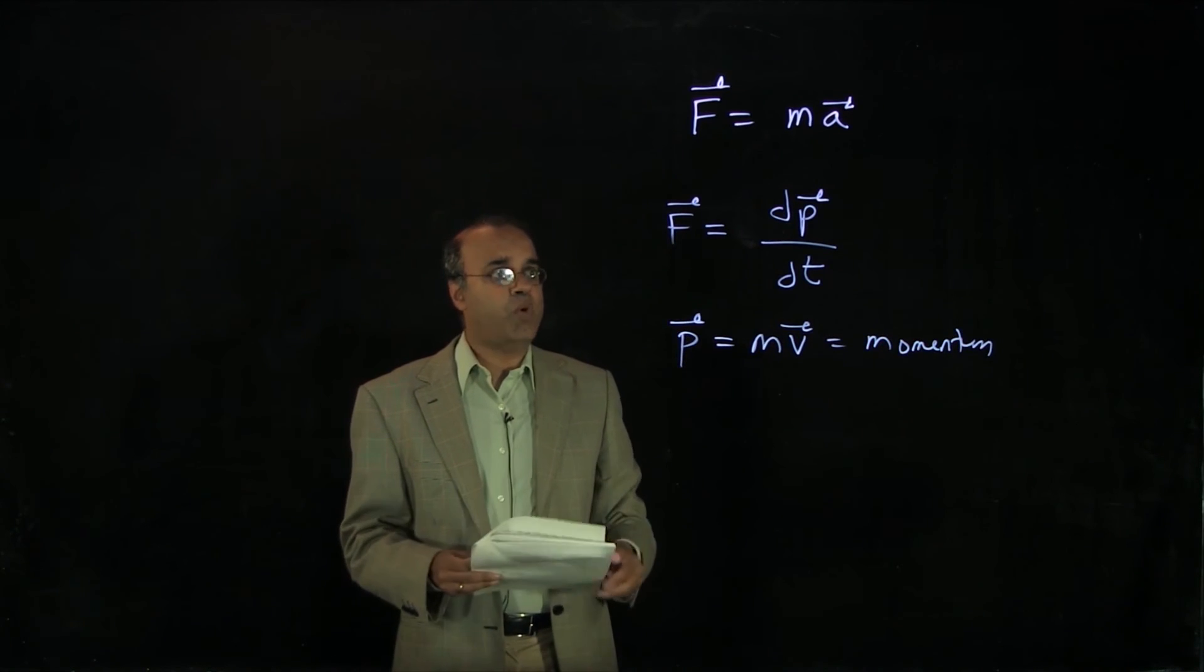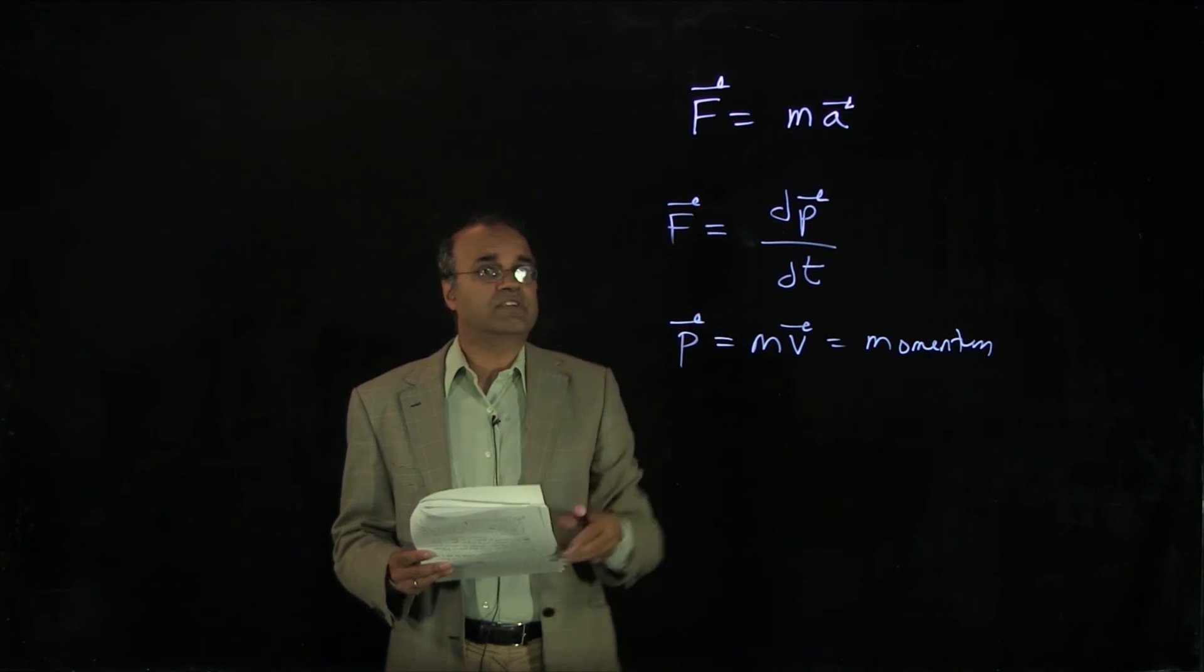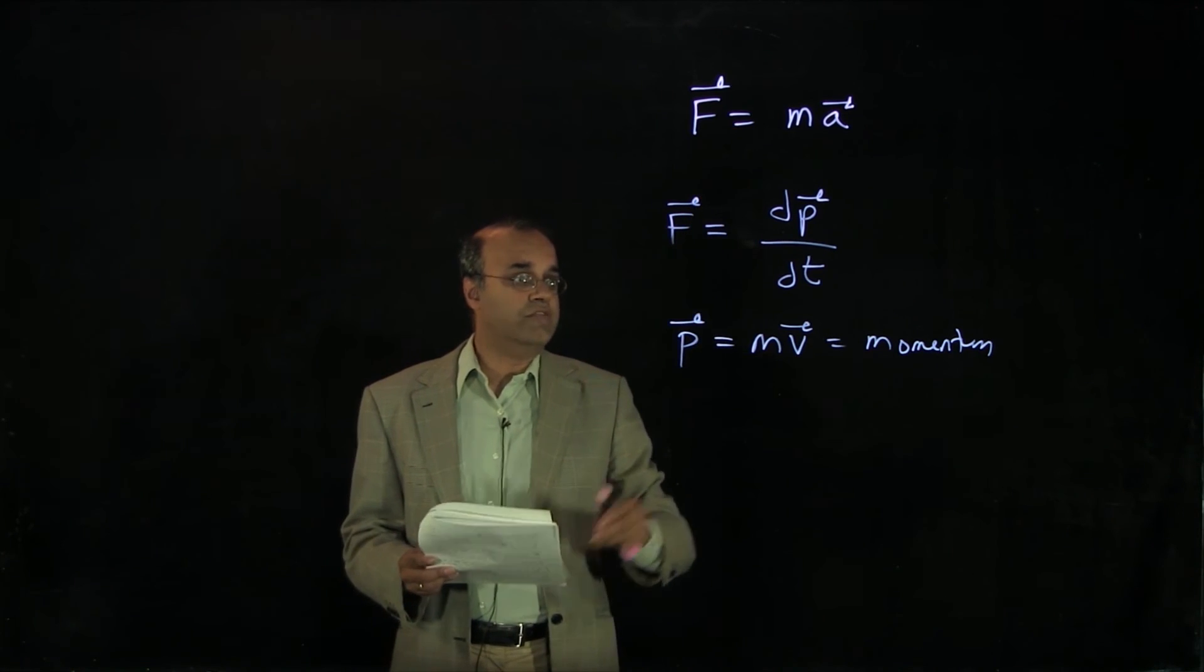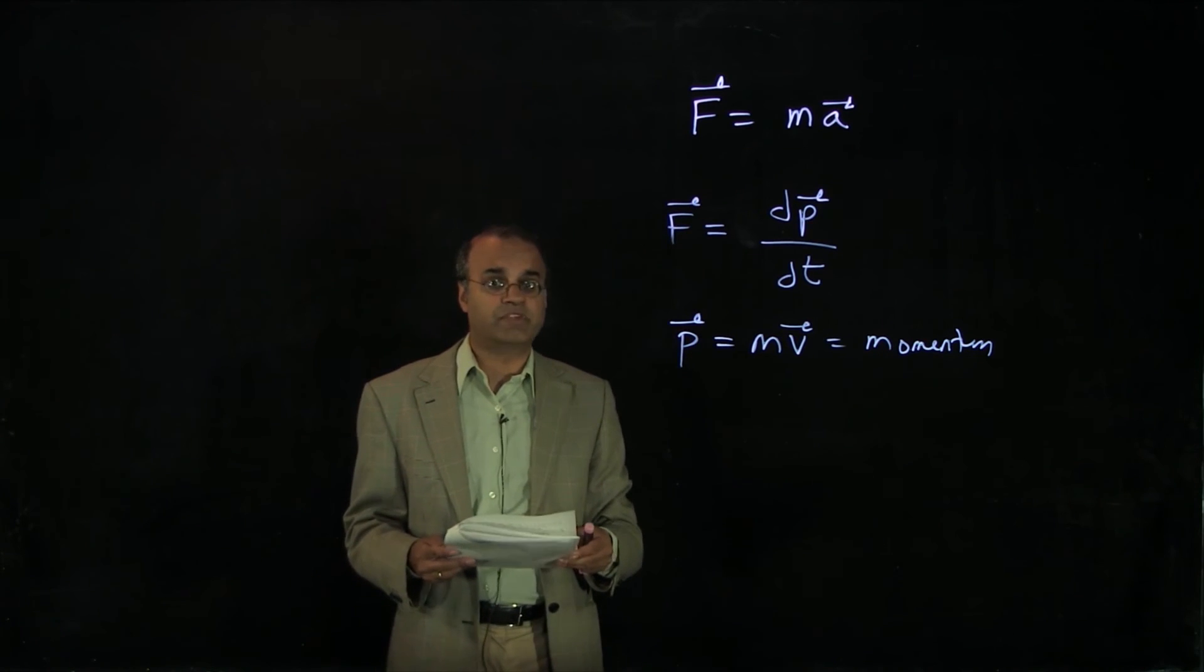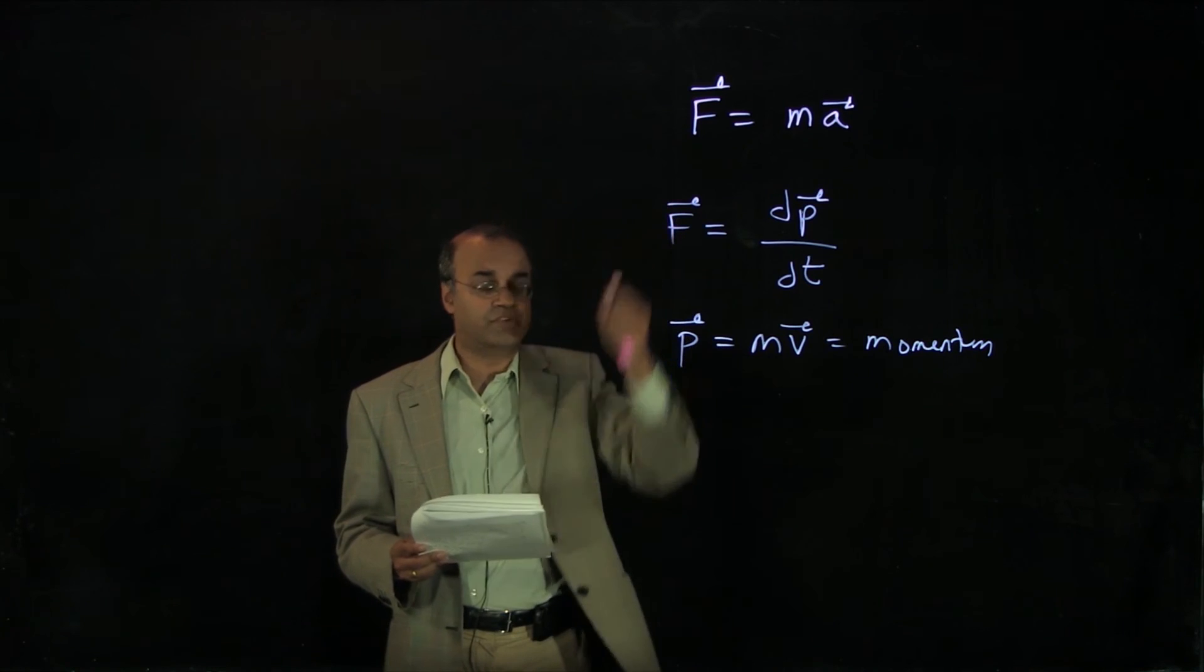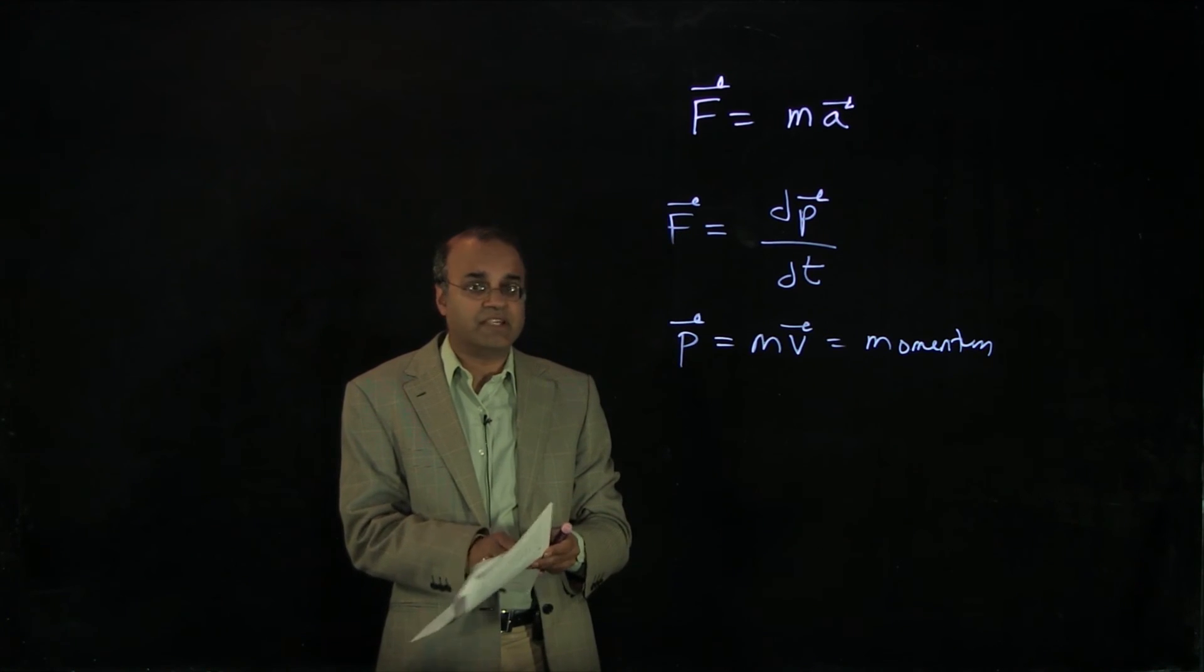For a point mass that's constant, these two equations are exactly identical. If you take the derivative of m times v, where m is a constant, you just get m times the vector a, and you get the first equation back. It's just a fancier way of writing the same thing.